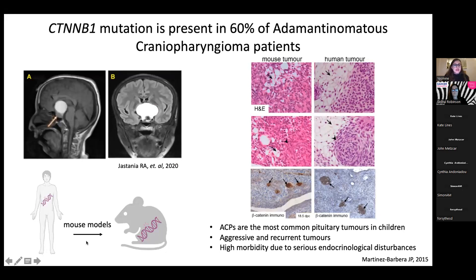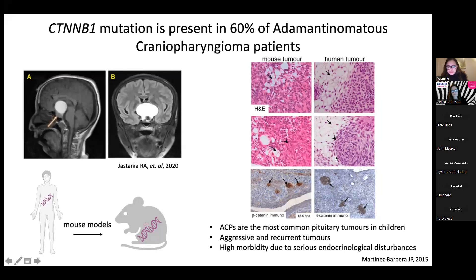Although this is not a neuroendocrine tumor, it is the most common pituitary tumor in children and is very aggressive with a high rate of morbidity and recurrence. When we induce the same tumor in a mouse model, we can recapitulate the phenotype with clusters of beta-catenin-expressing cells and similar structures between mouse and human tumors, such as microcystic changes and nodules.